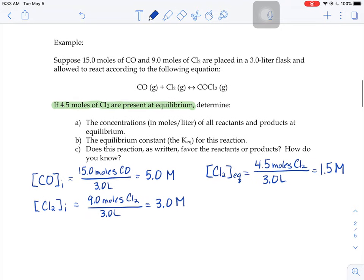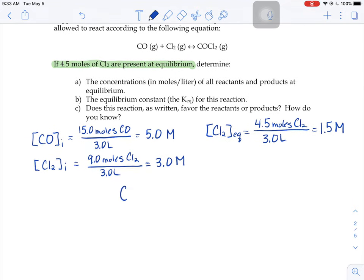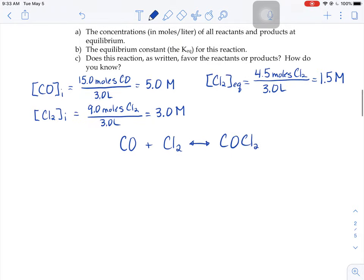Now let's set up this ICE table. So I'm just going to rewrite that balanced equation from up above. And then I'm going to put the acronym ICE down the side. And then you're going to set this up as a little grid and fill in the information that you know.